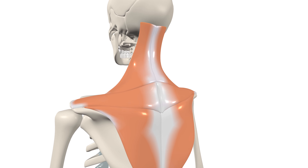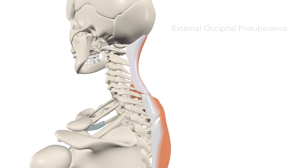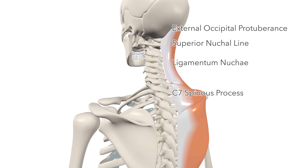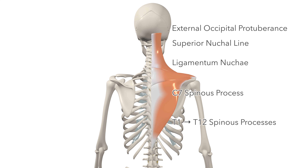The trapezius arises from the external occipital protuberance, the superior nuchal line of the occipital bone, the ligamentum nuchae, the spinous process of the seventh cervical vertebra, and the spinous processes of all of the thoracic vertebrae.